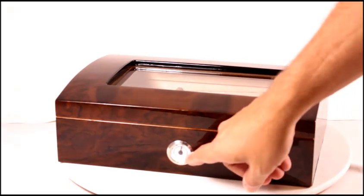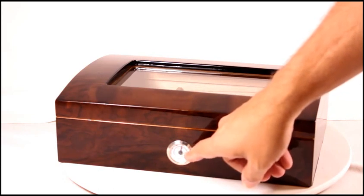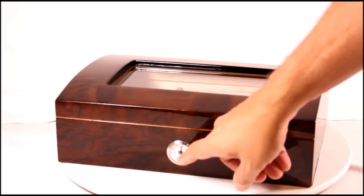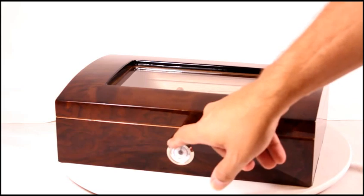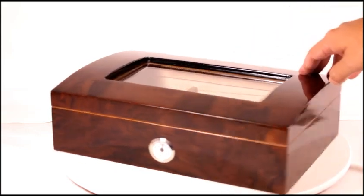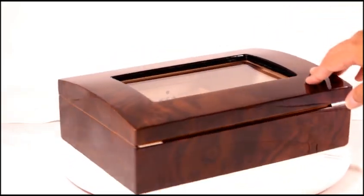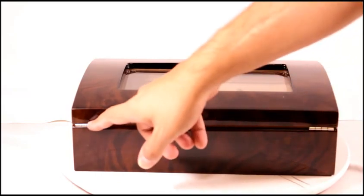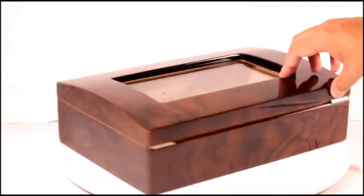On the front of the humidor there is a front mounted hygrometer with a glass front and a silver trim. On the back you have two hidden quadrant hinges also with a silver trim.